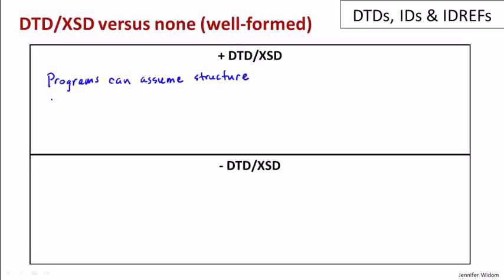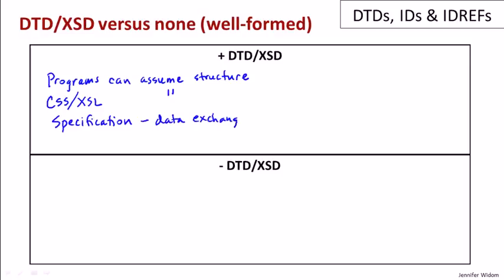Second, we talked about cascading style sheet language and extensible style sheet languages — languages that take XML and run rules on it to process it into a different form, often HTML. When you write those rules, if you know the data has a certain structure, the rules can be simpler. Another use for DTDs or XSDs is as a specification language for data exchange — for example, a company receiving purchase orders in XML can use the DTD as a specification for what the XML needs to look like. They're also useful for documentation. In general, these are the benefits of typing — strongly typed data versus loosely typed data.